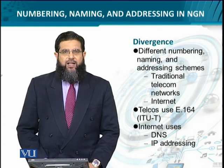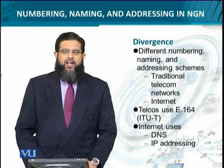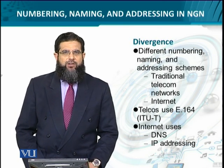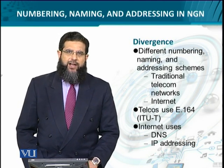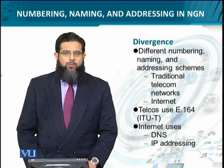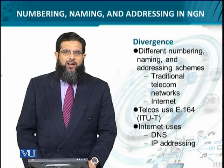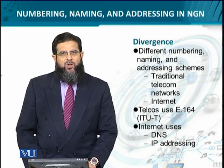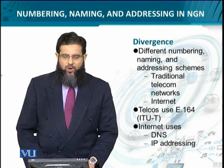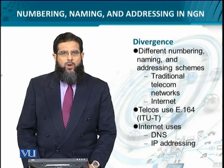So let's talk about divergence first. Numbering mechanisms to label or identify devices, naming them for human consumption, and addressing them to deliver or receive traffic is an important activity. Traditional telecom networks — PSTNs and PLMNs — all use E.164. The internet, primarily all-IP, uses DNS for naming and addressing and IP addresses for numbering and addressing. This means both DNS and IP address together do what E.164 does single-handedly.